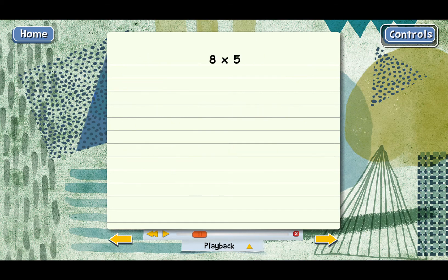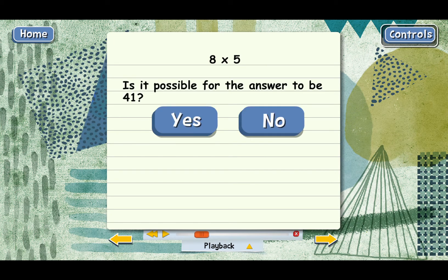Now, why don't you answer this? In the problem 8 times 5, is it possible for the answer to be 41? You got it. There's no way the answer to 8 times 5 can be 41, because any number times 5 has to end in 5 or 0. 41 ends in 1, so that won't work.